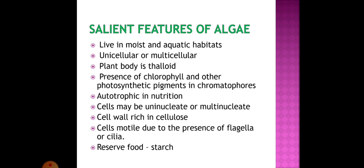Salient features of algae: They live in moist and aquatic habitats. They are either unicellular or multicellular. The plant body is thaloid. They contain chlorophyll and other photosynthetic pigments in chromatophores. They are autotrophic in nutrition and can prepare their own food through photosynthesis. The cells may be uninucleated or multinucleated. The cell wall is rich in cellulose. The cells are motile due to the presence of flagella or cilia. Reserved food material is starch.